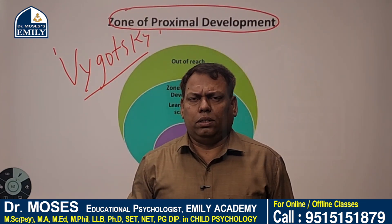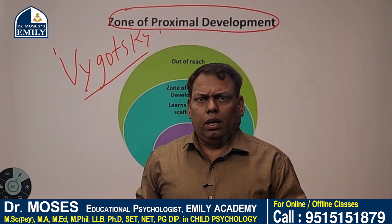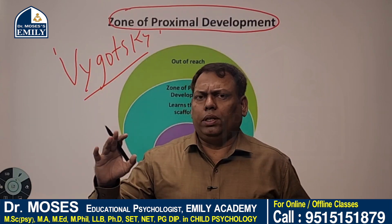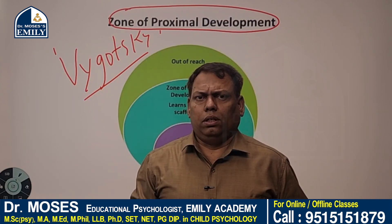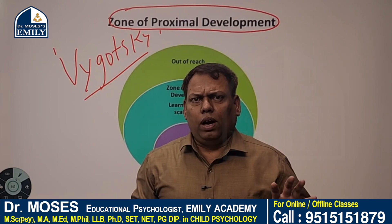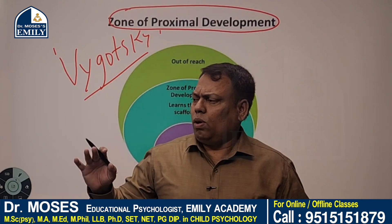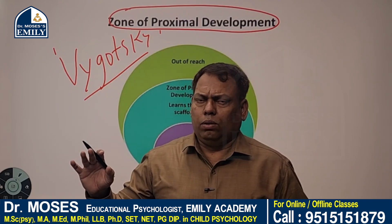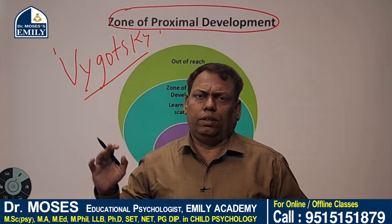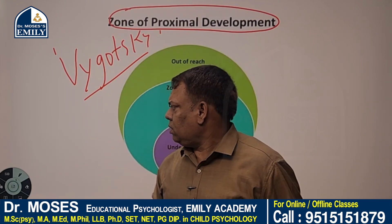What is the meaning of Zone of Proximal Development? It is the gap between actual development and probable development — the gap between what a child knows independently and what a child knows with the assistance of others, or more knowledgeable others.